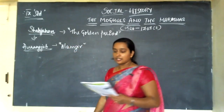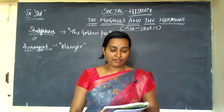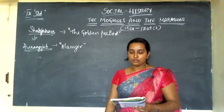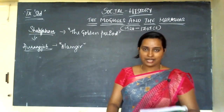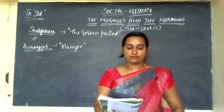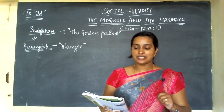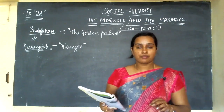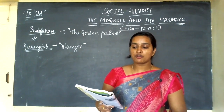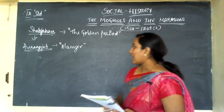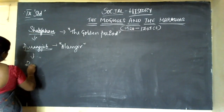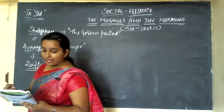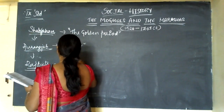Aurangzeb temporarily conquered rebellious regions in the east and northwest. His decision to imprison and dishonor Shivaji resulted in future attacks on the Mughals. He faced revolts from the Rajputs of Mewar, Rathores, Jats, Bundelas, and Satnamis in the north. He waged war against Adil Shah of Bijapur and Nizam Shah of Golkonda and annexed them. Ultimately, his enmity with the powerful Rajputs led to the downfall of the Mughals.